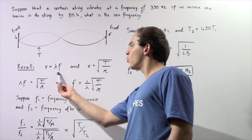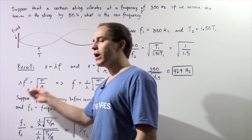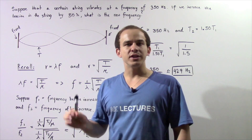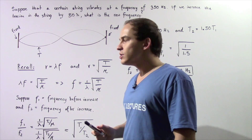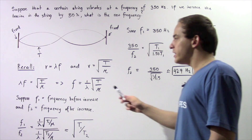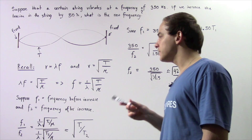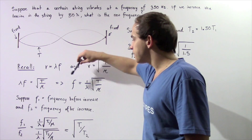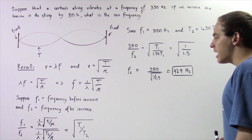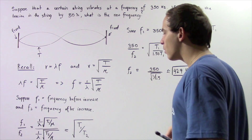Notice that velocity is equal to both of these quantities. So we can take this quantity and equate it to this square root. We get that the product of the wavelength and the frequency is equal to the square root of the tension divided by our mu. Since we're looking for what the new frequency is, we have to use this equation and rearrange and solve for our frequency. So frequency is equal to 1 divided by wavelength multiplied by the square root of tension in the chord divided by our mu.